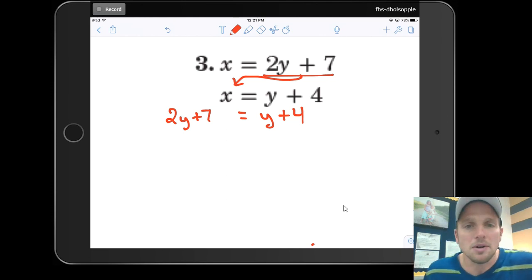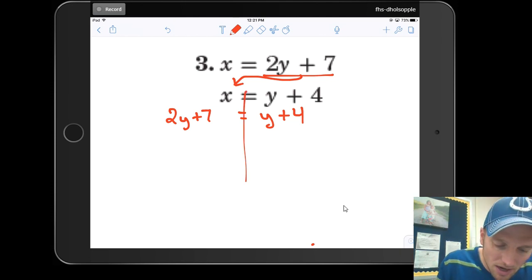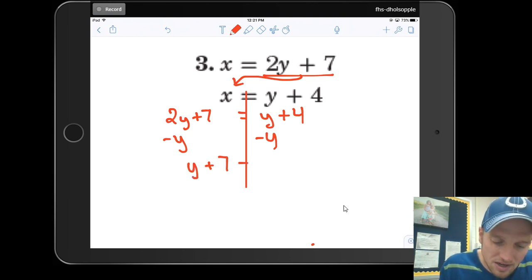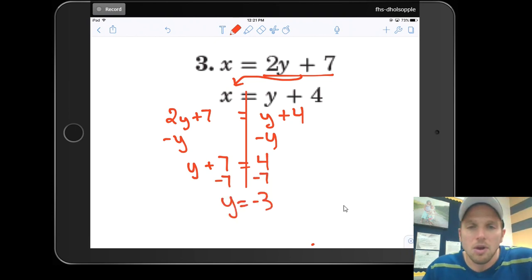And if you see this, no problem here. Let's take letters left, numbers right. Minus y to both sides. So 2y minus 1y is just y plus 7 is equal to 4. Subtract 7 from both sides and you get y equals negative 3.